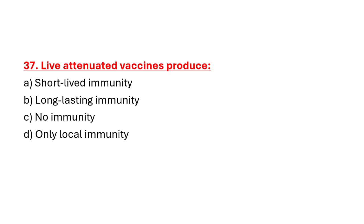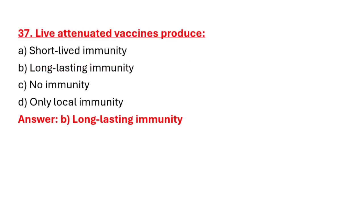Question 37: Live attenuated vaccines produce. Option A: Short-lived immunity. Option B: Long-lasting immunity. Option C: No immunity. Option D: Only local immunity. Correct answer is Option B: Long-lasting immunity.